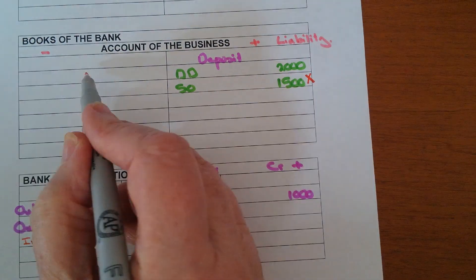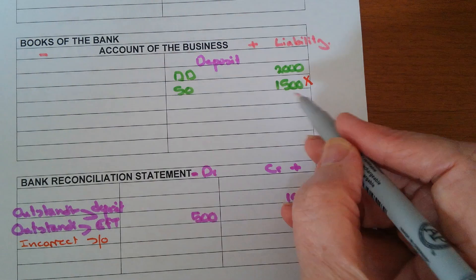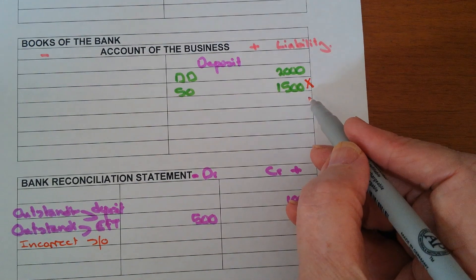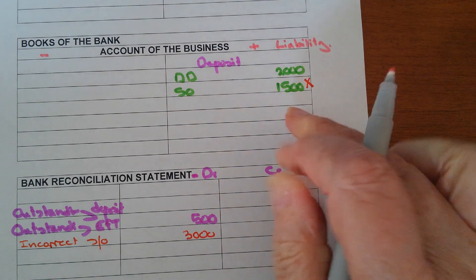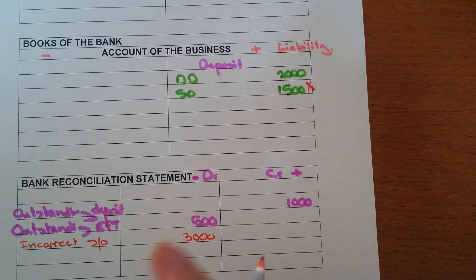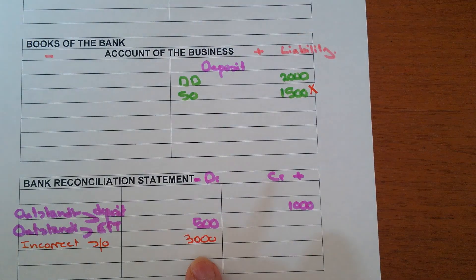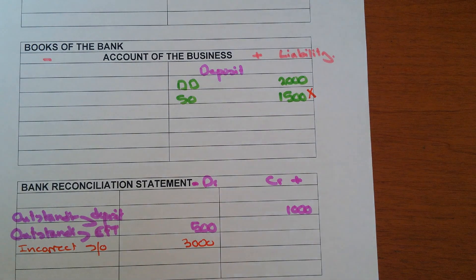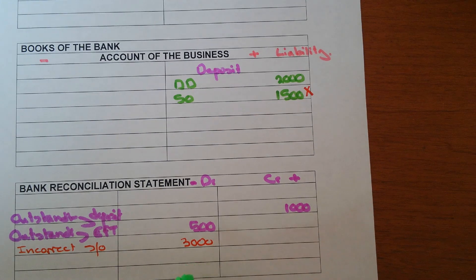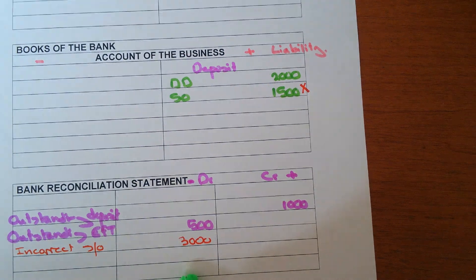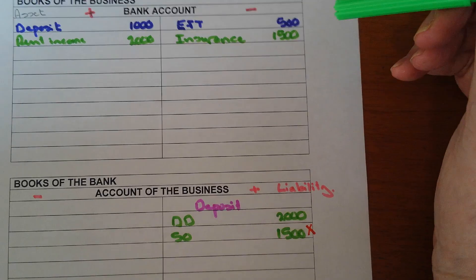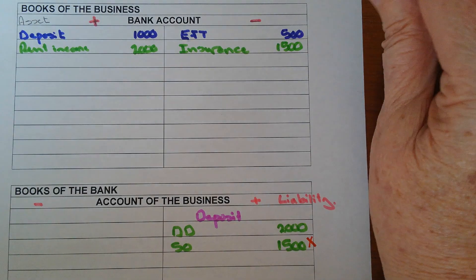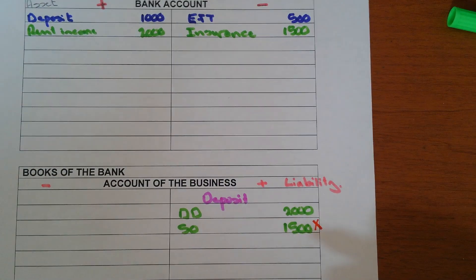To correct a bank mistake: since the stop order was supposed to be on the debit side, we put it once on the debit side to cancel the mistake — then a second time on the debit side to show the correct entry, resulting in a net balance. If the bank made the mistake it goes on the bank reconciliation statement; if we made the mistake it goes in the cash receipts, cash payments, or bank account.